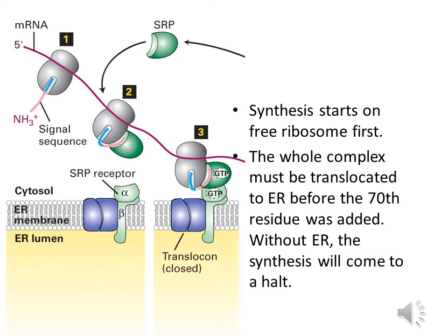The synthesis starts from a free ribosome first. The whole complex must be translocated to the ER before the 70th residue is added. Without reaching the ER in time, synthesis will come to a halt.